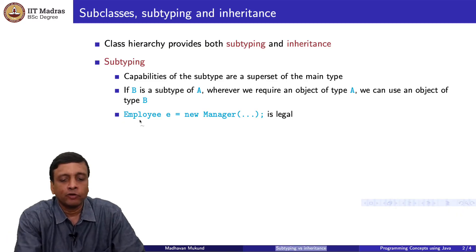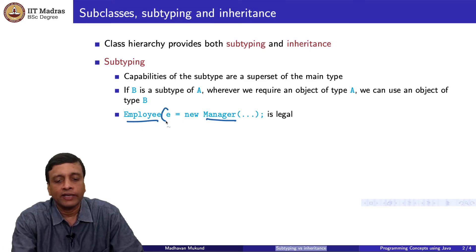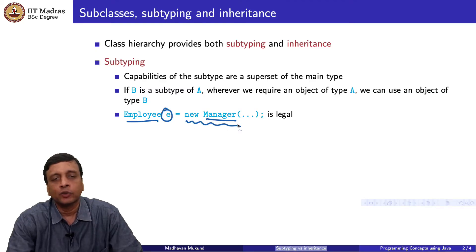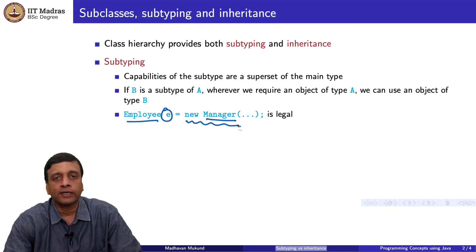In our concrete example, we could define manager as a subtype of employee. If we define a variable E which is supposed to be of type employee, at runtime we can instantiate it to a new manager object. This is a legal instantiation because anything that we would ask an employee type to do can also be performed by manager. But remember there is dynamic dispatch, so the same function if it is overridden in the manager will behave according to the runtime definition of the object. Nothing that we wish to do on A will be forbidden by this manager object.